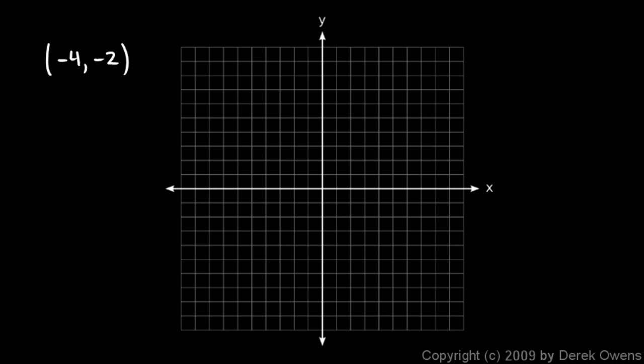Next we're told to plot the point negative 4, negative 2. So we start here and we go to the left 4 — remember don't count this as 1, that's your 0 position. Then we count 1, 2, 3, 4 to the left, and 2 down. So it puts us right here at this point. This is the point negative 4, negative 2.